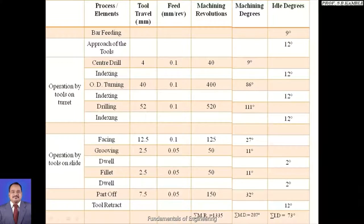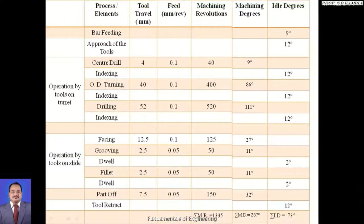When calculating the total of machining degrees and idle degrees, it must sum to 360 degrees because the cam completes one full rotation. If the total does not reach 360, adjust the values between machining and idle degrees so that their combined total equals 360 degrees.